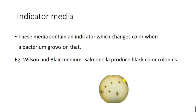Indicator media contains an indicator that changes color when bacteria grow on it. An example is Wilson and Blair medium, where a stool sample is used, and if salmonella colonies are present, they will produce black-colored colonies.